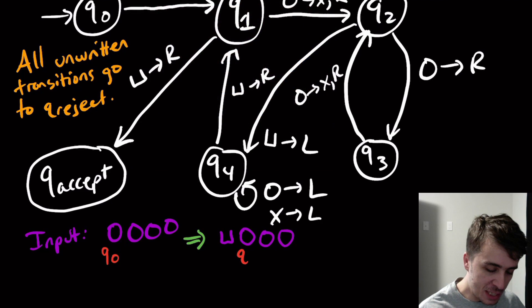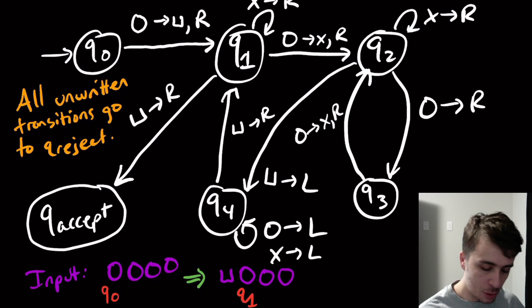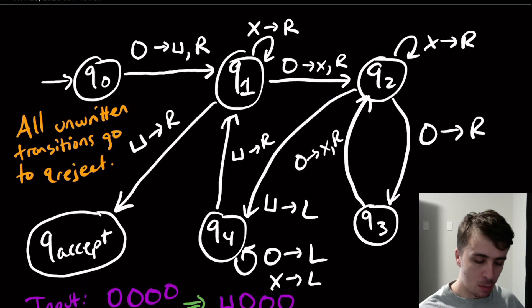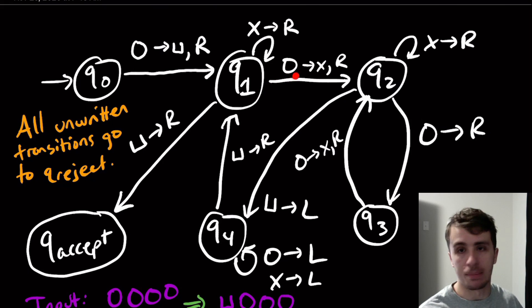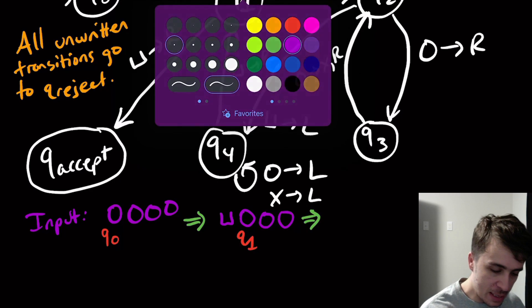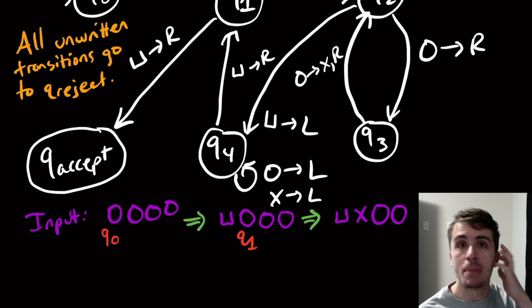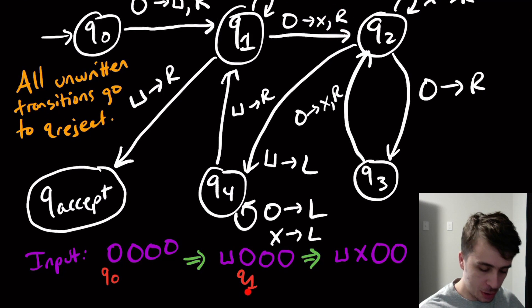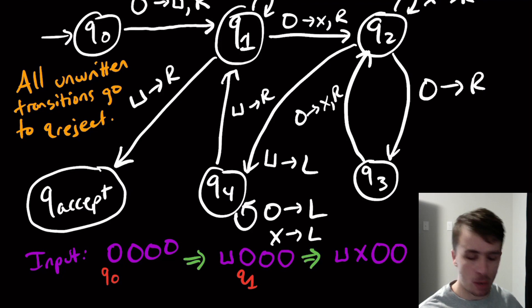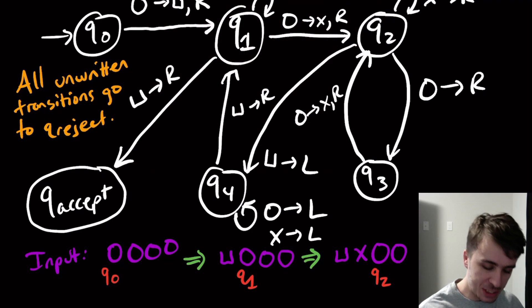We're in q1 looking at a zero. There is a transition from q1 on input zero: change this zero to an x and move right. So the tape now has four cells — the second one changes to an x, and we still have two zeros further right. We moved right, so we're now at the third cell in state q2.